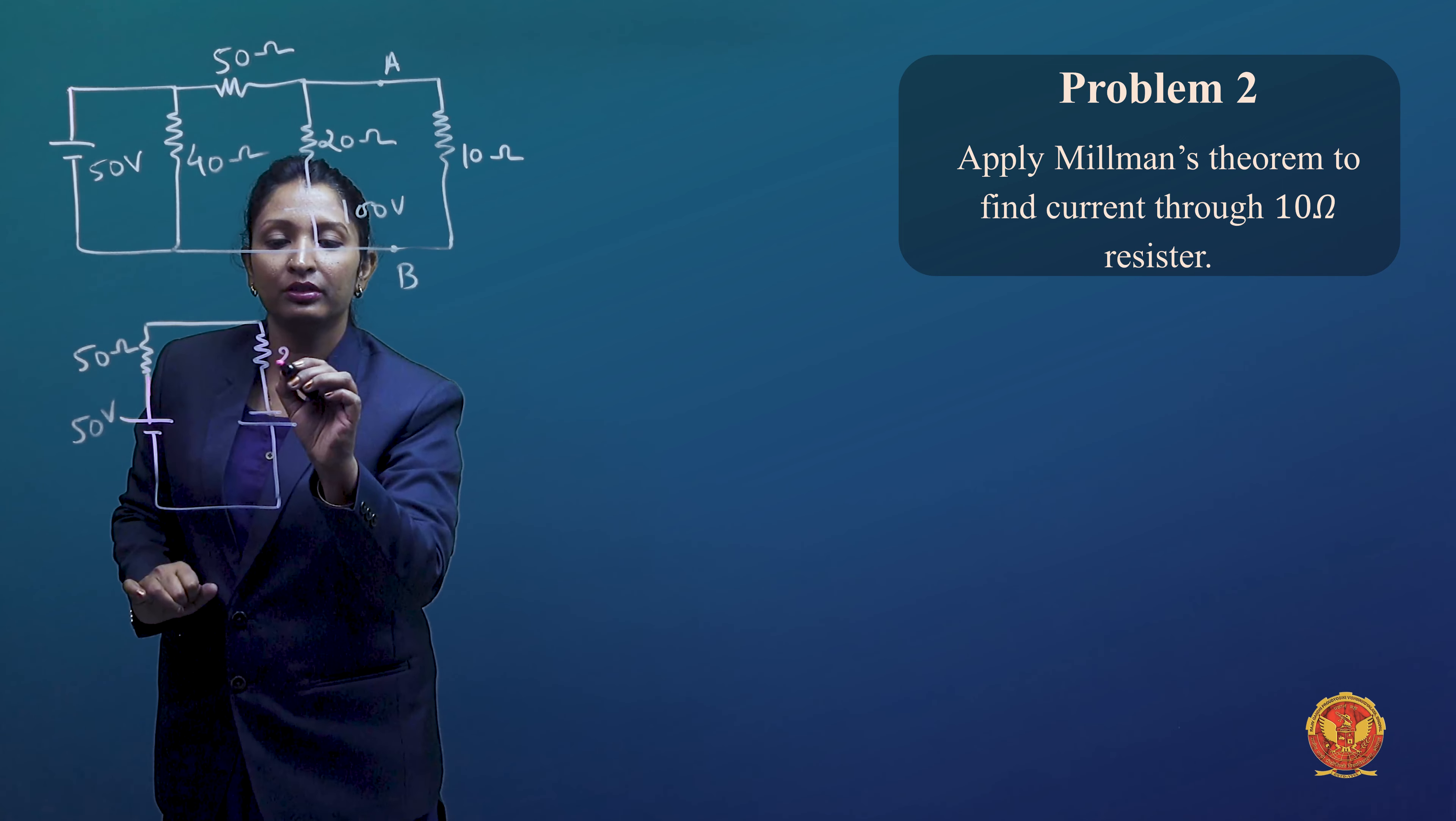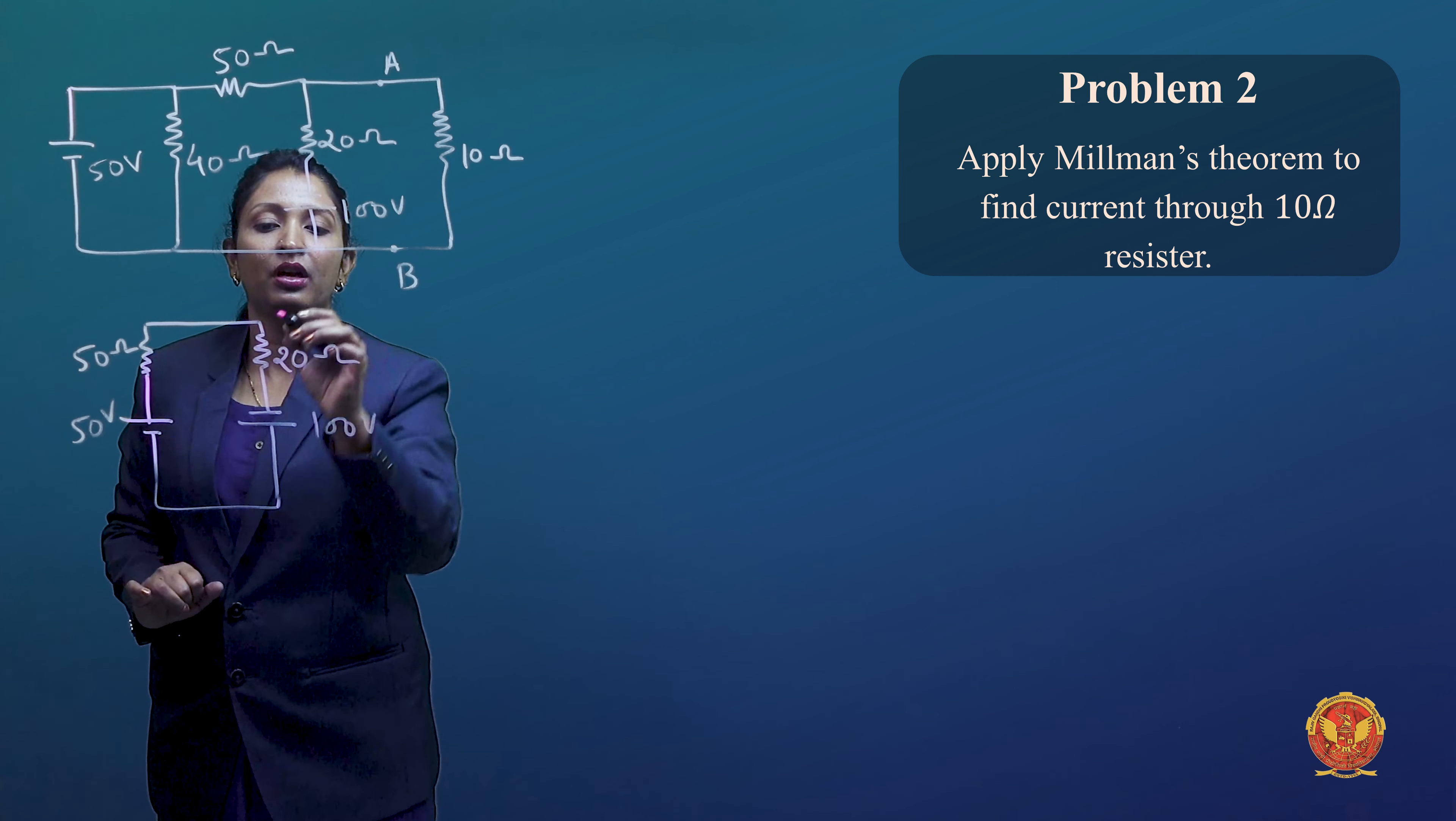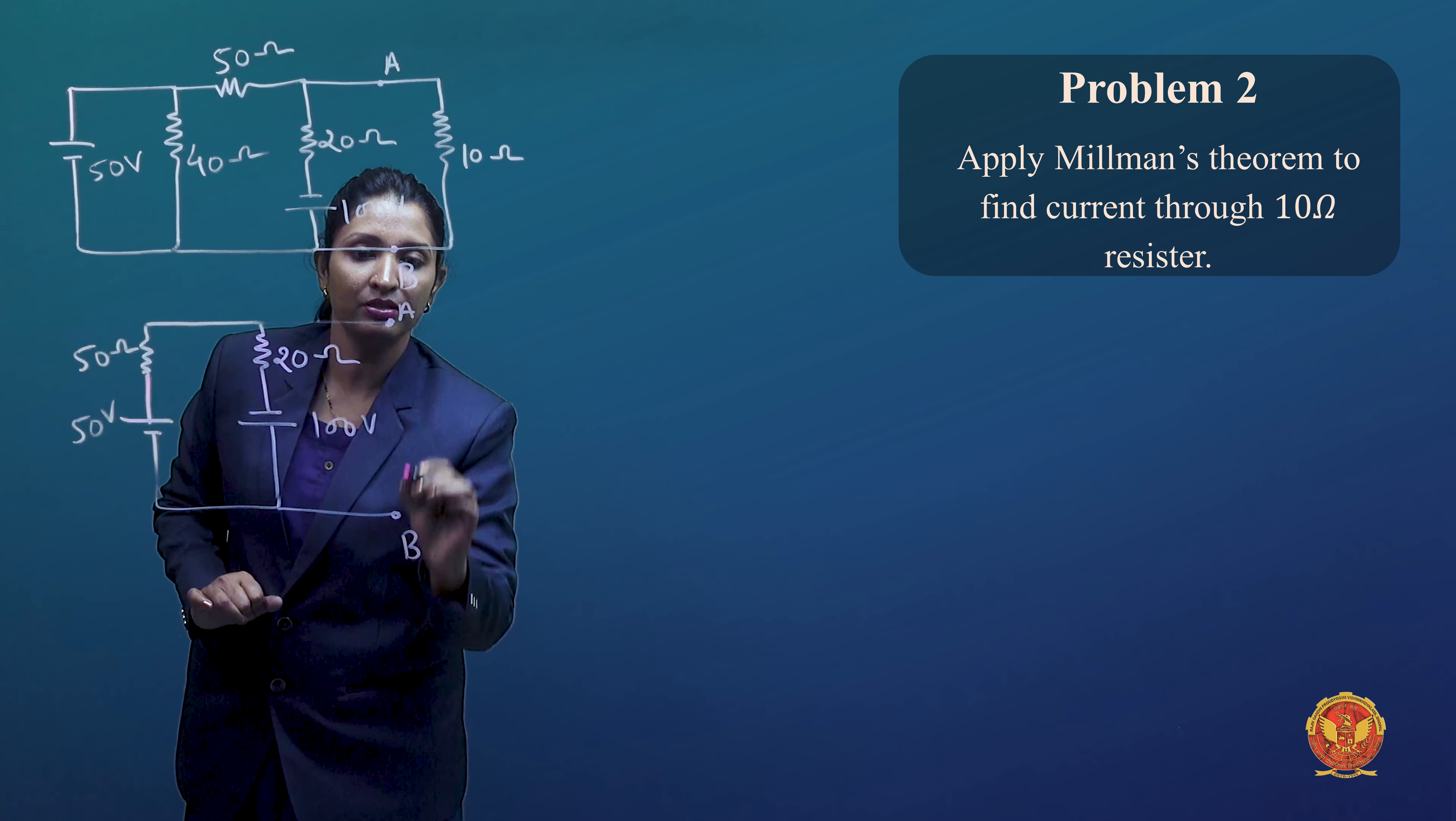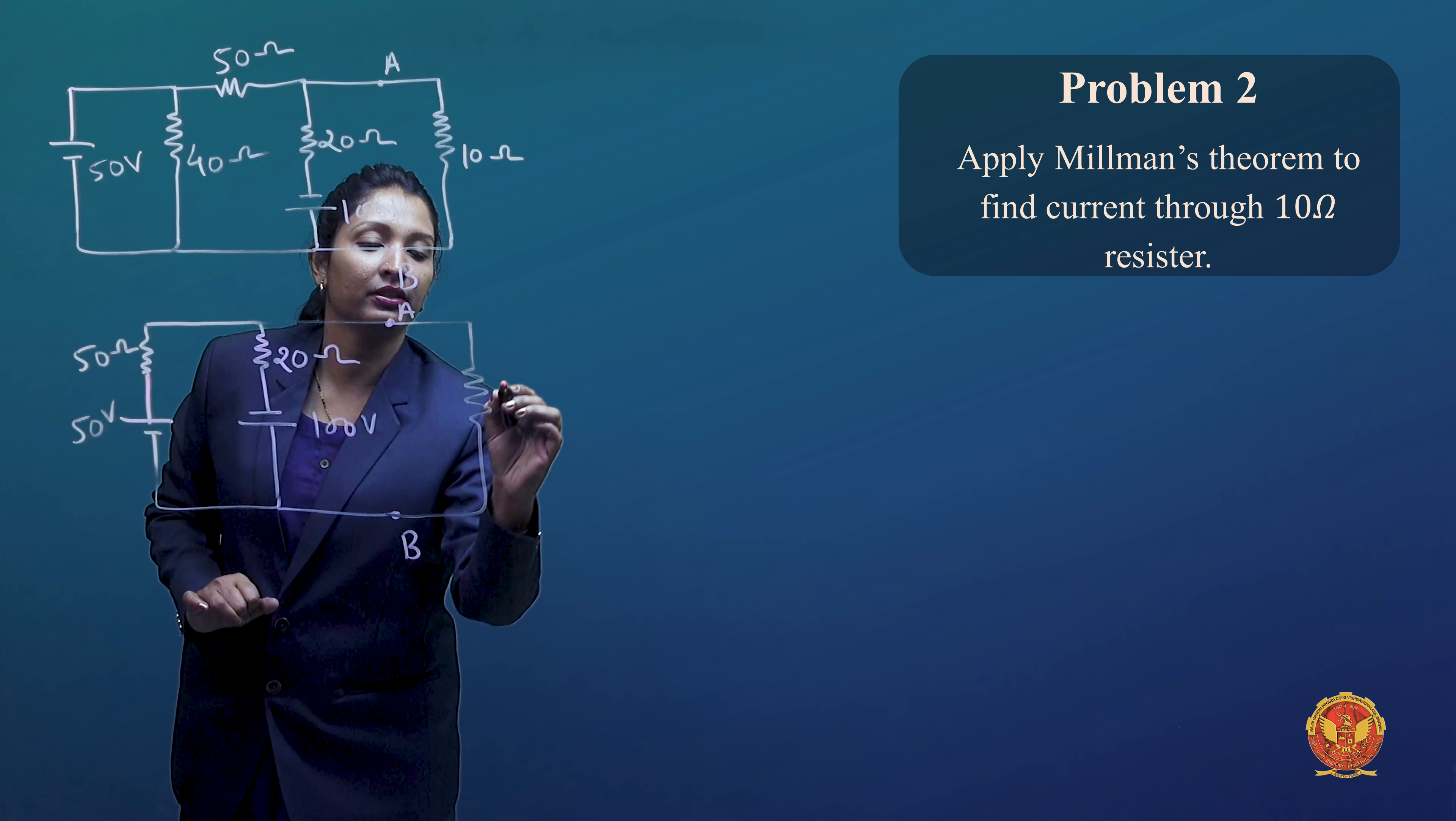This was 20 Ohm and 100V and this across is A and B. This is our, as it is, 10 Ohm.